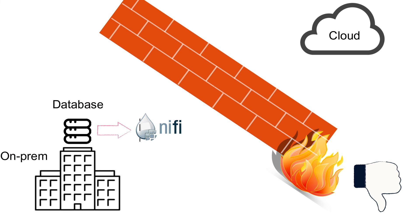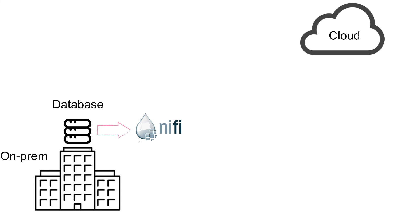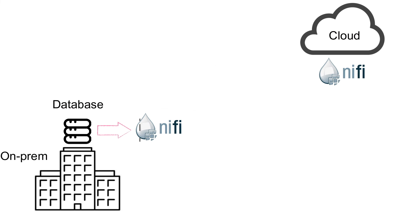Finally, let's touch on performance considerations. It's often advised to have a local producer to avoid hitting timeouts and network disconnects for every data transfer. For all of these reasons, it may make sense to have two NiFi instances — one on-prem and one in the cloud — talking to each other through Site-to-Site, which is responsible for moving data through the internet in a secure and efficient way.